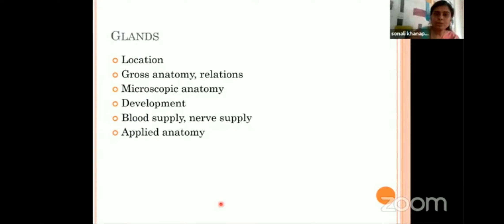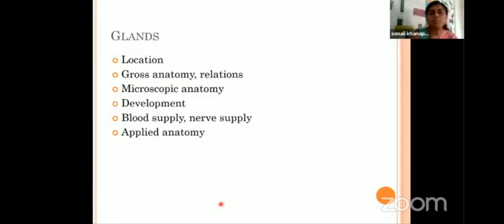We are coming to the end of our session now. We will see glands — how we are going to describe them. First and foremost, we should know the location, where exactly the gland is located, what is the gross anatomy and relation of that gland, histology, development, blood supply, nerve supply and applied anatomy. Try and read in this sequence only, so that you won't miss out on anything.